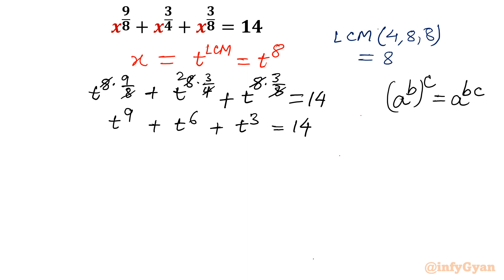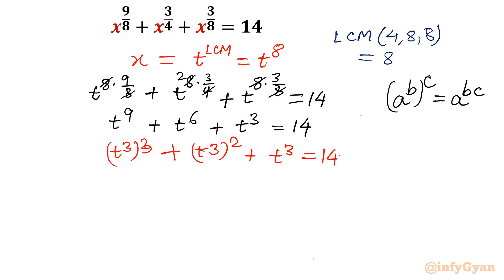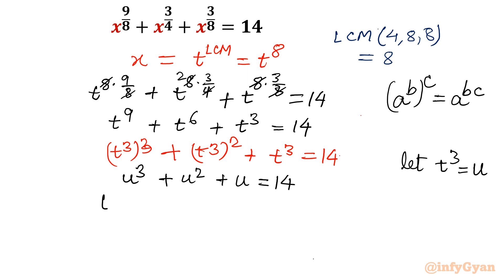Now we will provide a second substitution. We can write t^9 as (t^3)^3, t^6 as (t^3)^2, and t^3 as t^3. So the equation becomes (t^3)^3 + (t^3)^2 + t^3 = 14. Let t^3 = u. The equation becomes u^3 + u^2 + u = 14. Taking all terms to the left: u^3 + u^2 + u − 14 = 0.